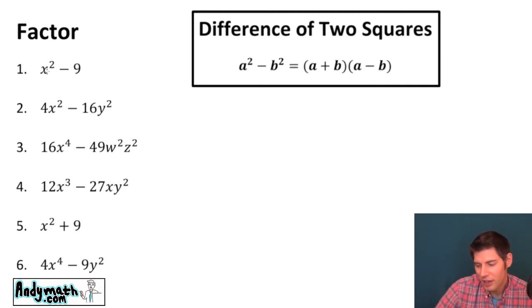Here's the notes. This says a squared minus b squared equals a plus b times a minus b. I think it's going to be easiest to learn this with some examples.